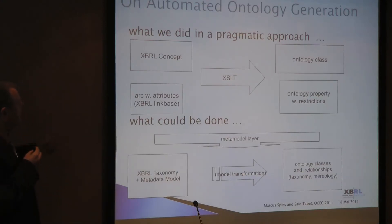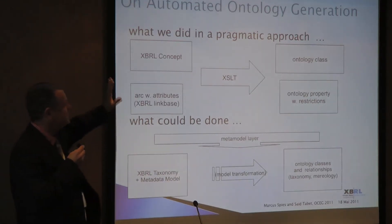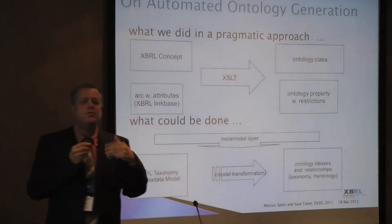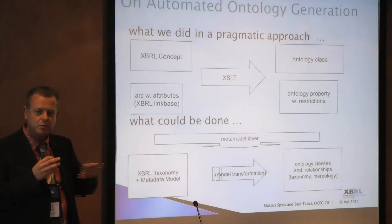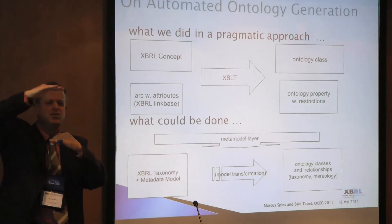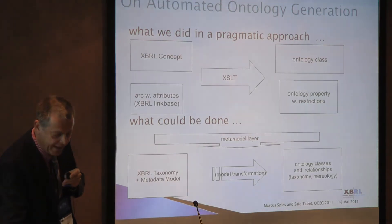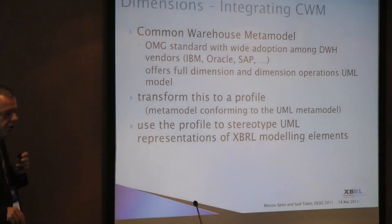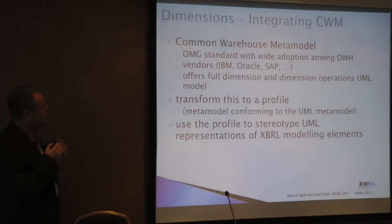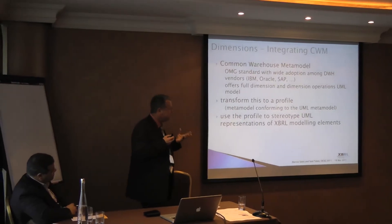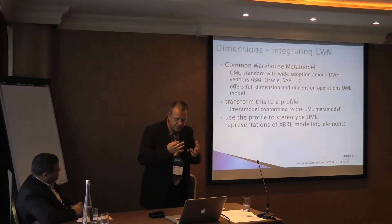We used XSLT with concepts from XBRL, link base information, arc roles, and role types, and defined rules for transforming these into an ontology. The ontology was completely automatically built — with code that's only 3 to 4 pages of XSLT, not 100 pages. Finally, regarding dimensions and the Common Warehouse Meta-Model: if XBRL has the concept of dimensions, couldn't we express this in a more interoperable way — not losing the power of XBRL but making it available to other systems?